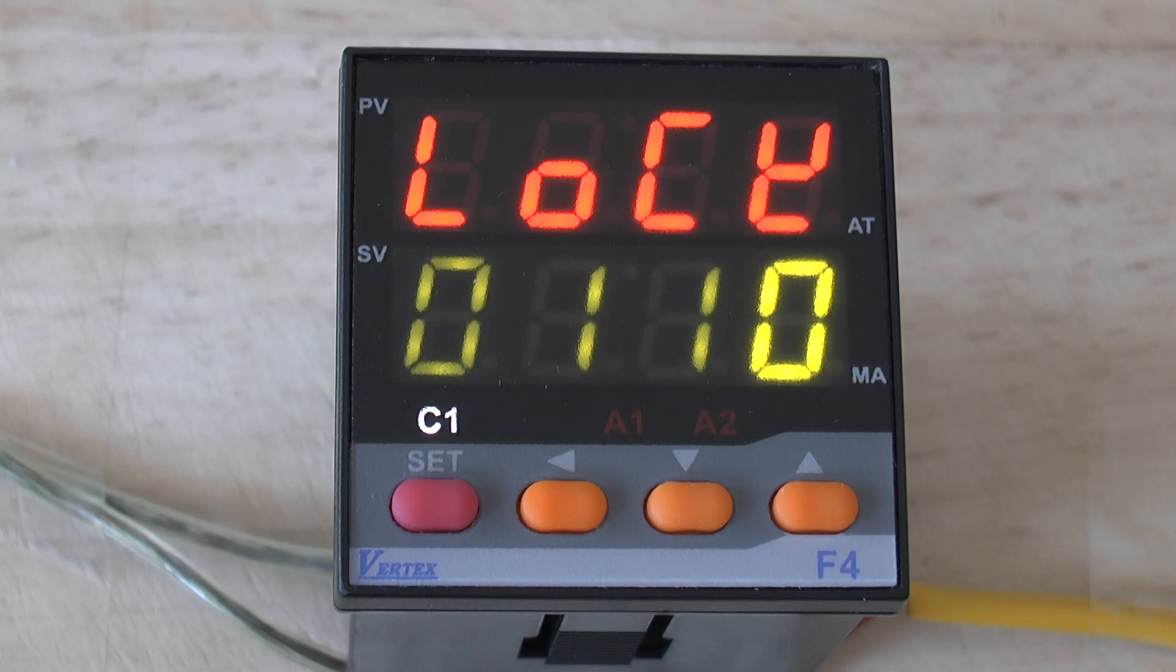The next parameter is the lock parameter. This is the parameter where, if you read in the manual, you can lock different levels so that the operators cannot access them.